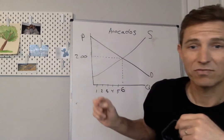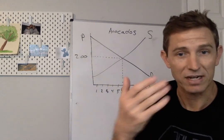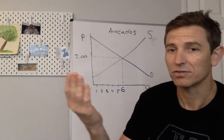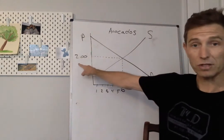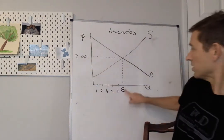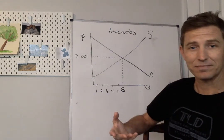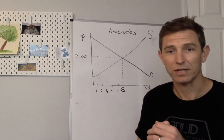I'm saying here that the market price for avocados is going to be two bucks. So that's gonna be the price that buyers pay. That'll be important for us. It's also the price that sellers receive when they sell one. Avocados are going for a price of two bucks. The equilibrium quantity, I hope you guys can see this over here, is six. And so those are gonna be important variables for our calculations here in a moment.